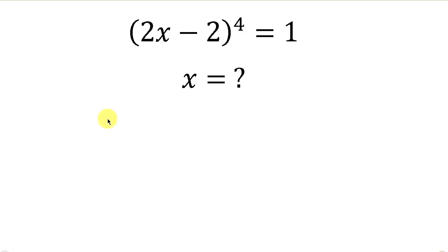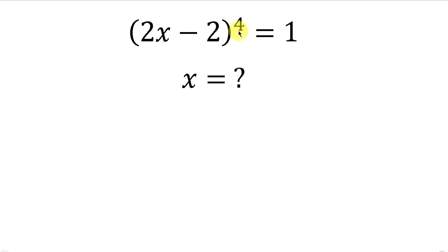Welcome back to my YouTube channel. Let's solve this question that says: find the values of x for which (2x minus 2) all raised to the 4th is equal to 1.